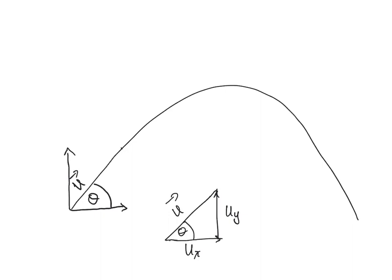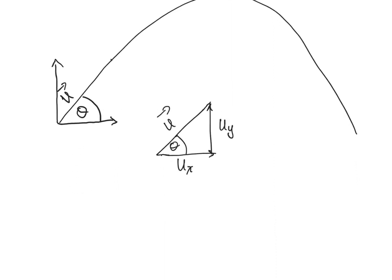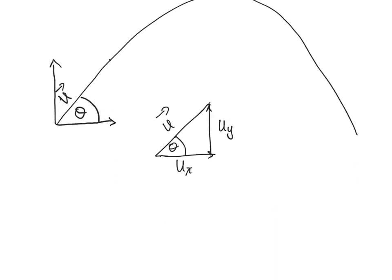We can just use trigonometry. So sine theta equals opposite, in this case uy, over hypotenuse. And we rearrange that formula - times both sides by u.